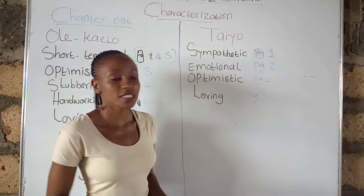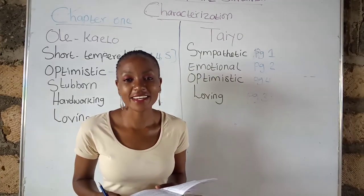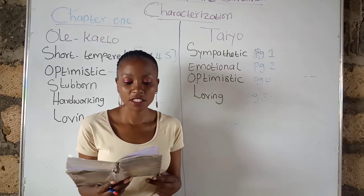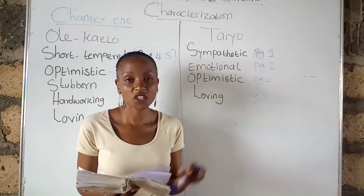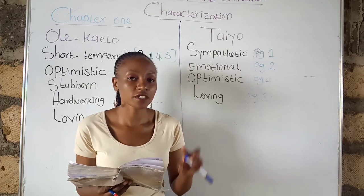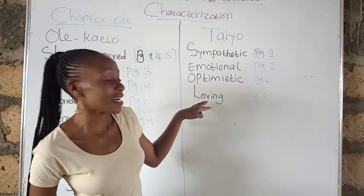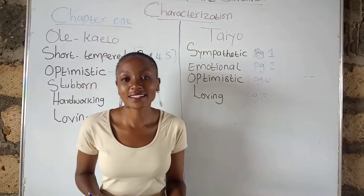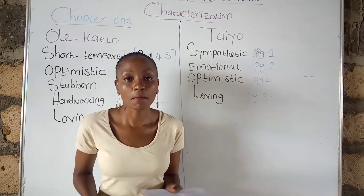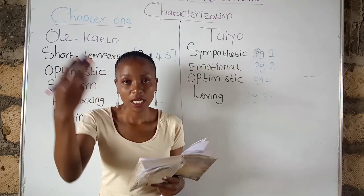She is also optimistic. On page four, she tells Resian they should have faith in their father and hope for the best. Page four, first paragraph: 'Let us have faith in him and hope for the best' — that is Tayo telling Resian. Lastly, she is loving — she loved her boyfriend, which is why it was painful to leave him behind, and she also loved Nakuru town. You can read the whole of page three to understand this better.